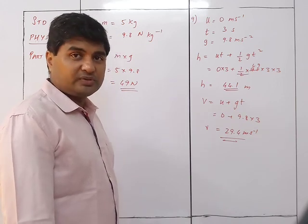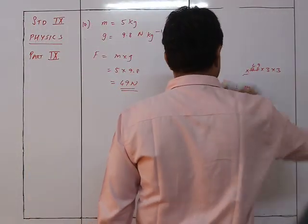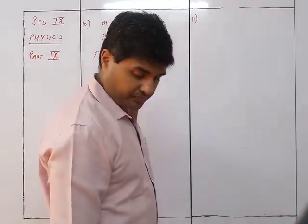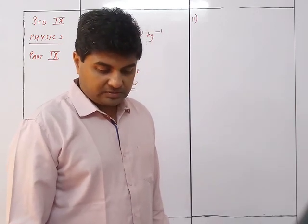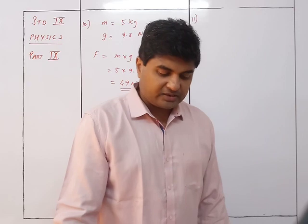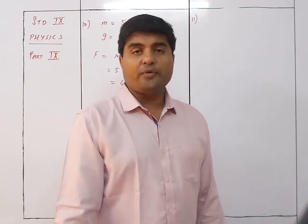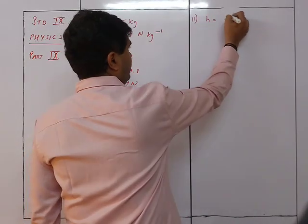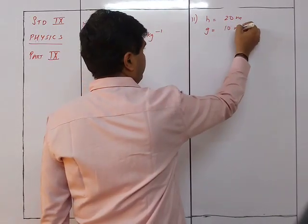Now we come to the more difficult questions. Question 11: A ball is thrown vertically upward. It goes to a height of 20 meters and then returns to the ground. Taking g = 10 m/s², find the initial velocity, final velocity on reaching the ground, and total time of journey. Given: h = 20 m, g = 10 m/s².